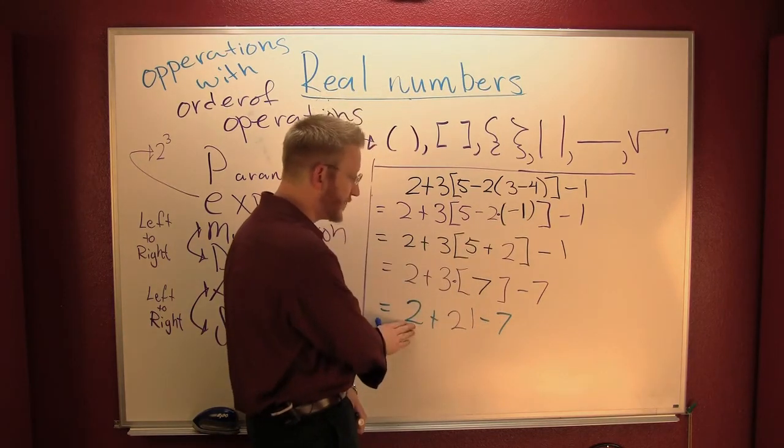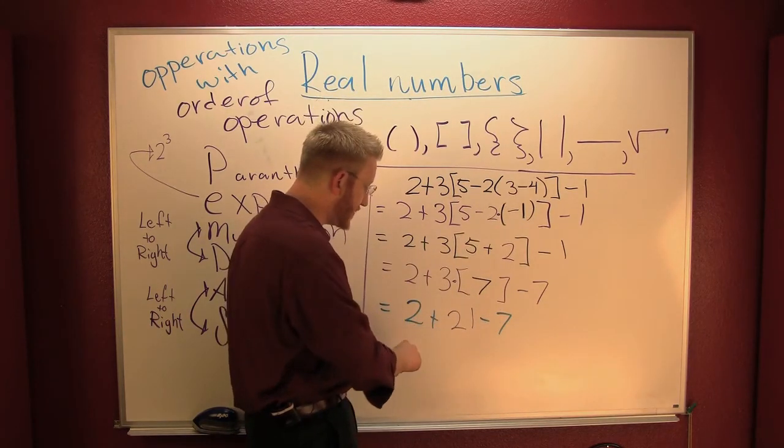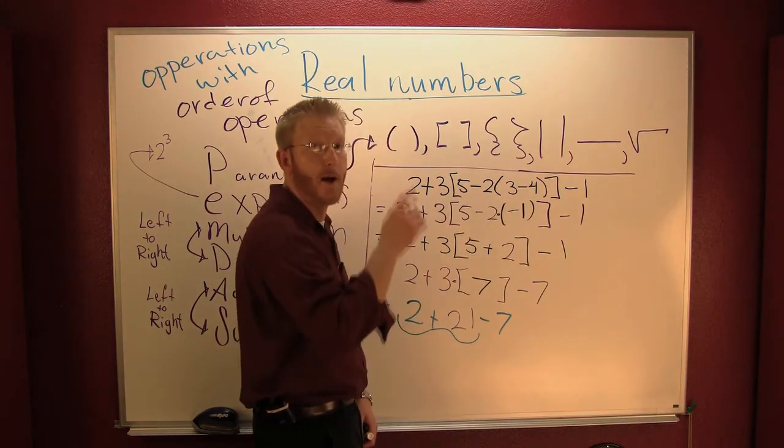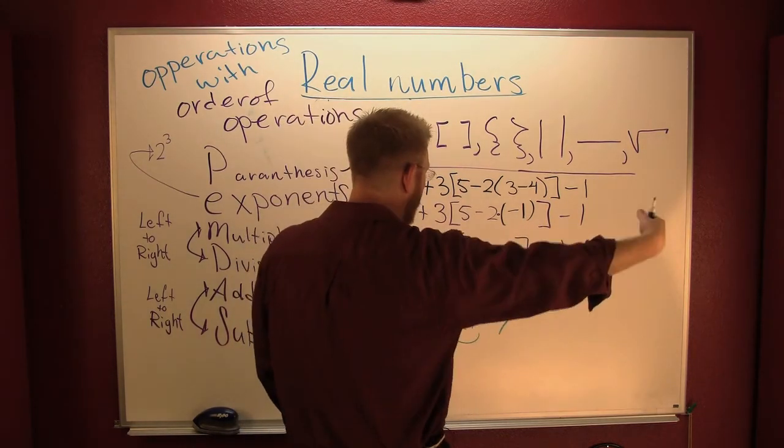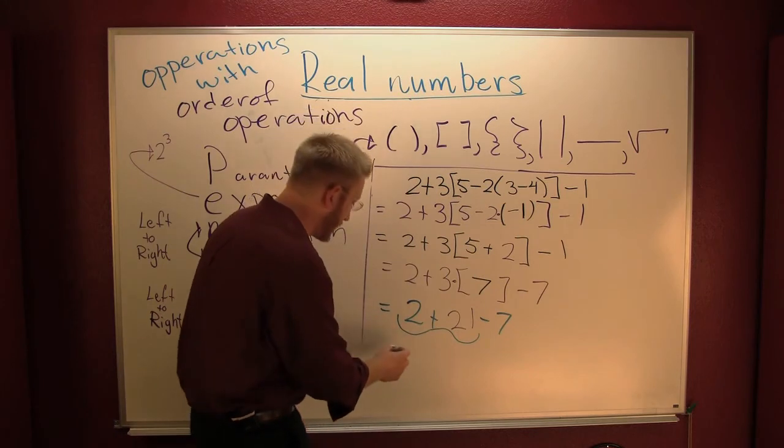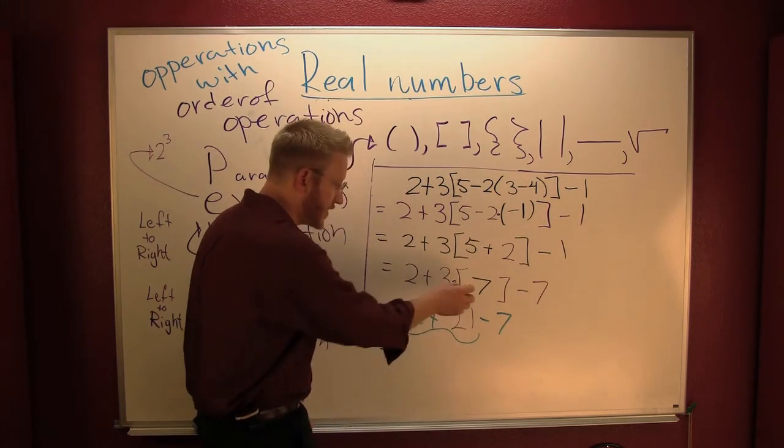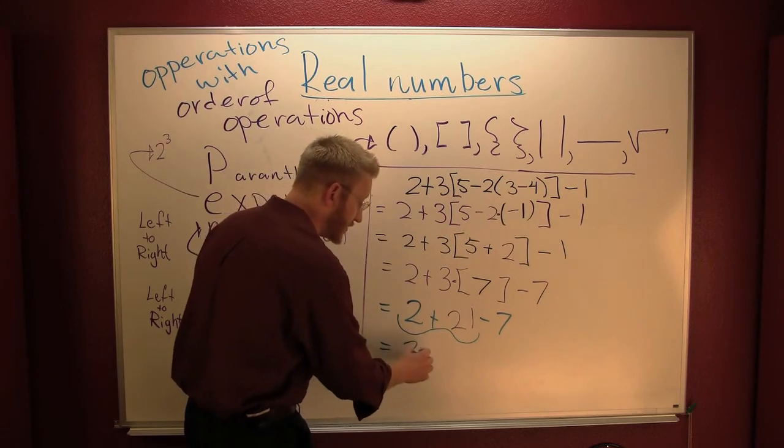So here, what's my leftmost number? Two. I'm going to take these two first, not because addition goes before subtraction, but because you go from left to right. Daniel-san, good stuff. Two and 21, do they have the same sign? Yes. That sign is positive, so this is a 23.